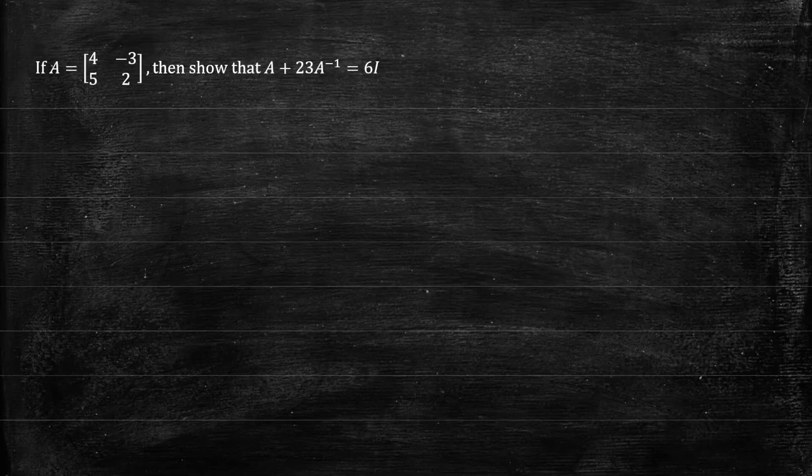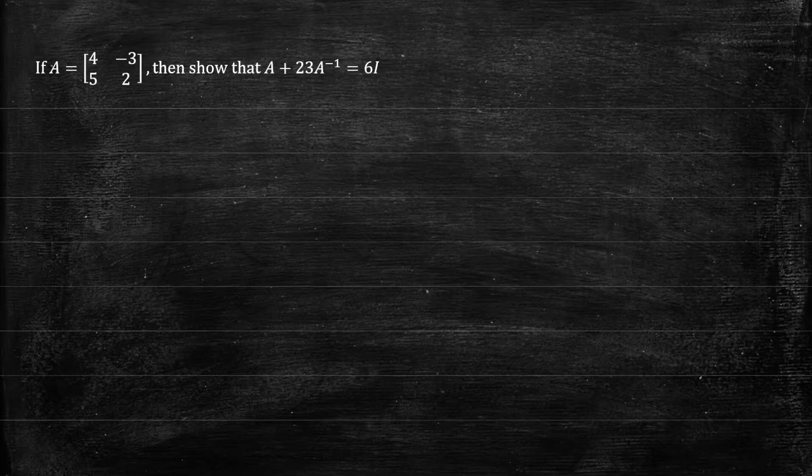In this question, we're given a 2 by 2 matrix, matrix A, which is 4, negative 3, 5, 2. And we need to show that A plus 23 times the inverse of A equals 6I, where I is the identity matrix.